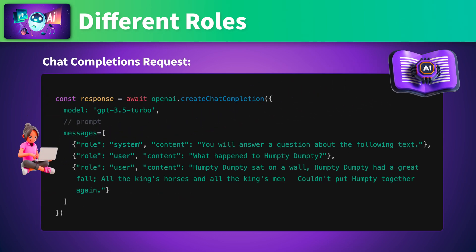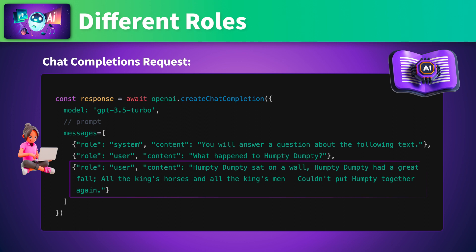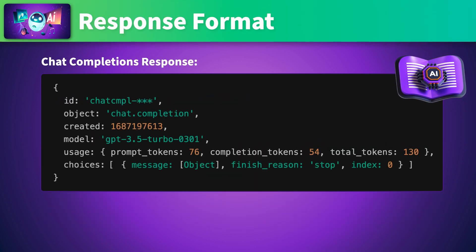In our project, we'll send a request object containing an array of messages. One message will be the high-level instructions with a role of system, telling the AI it will answer a question about the following content. Another message, in the role of user, will be the question we're asking about the content. And the last message, also as a role of user, will be the actual text content for the AI to analyze. Once we send our conversation messages to the Chat Completions API, we'll receive a response containing the assistant's reply, as well as additional information such as token counts for the prompt and the completion.